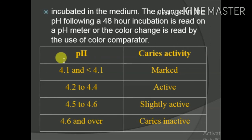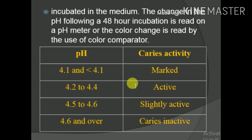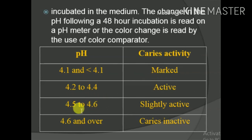Interpretation: if pH is 4.1 or less, the individual has marked caries activity. pH 4.2 to 4.4 indicates active caries lesions. pH 4.5 to 4.6 indicates slightly active caries. pH above 4.6 means the individual is caries inactive.